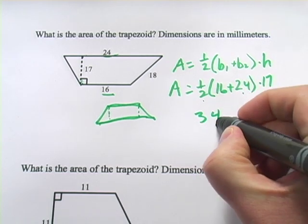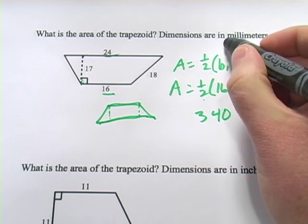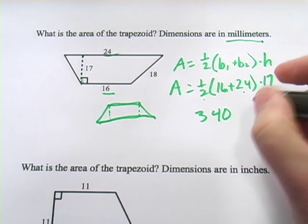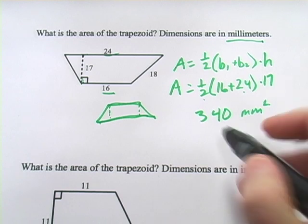And let's just think a minute about units. They told us the dimensions are in millimeters, but this is area, so it's going to be square units, or millimeters squared in this case.